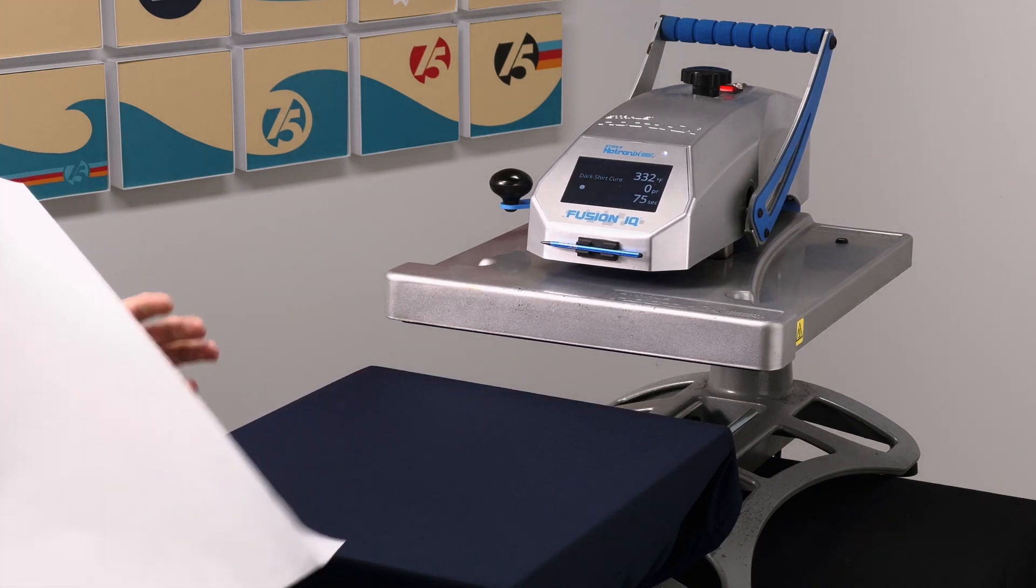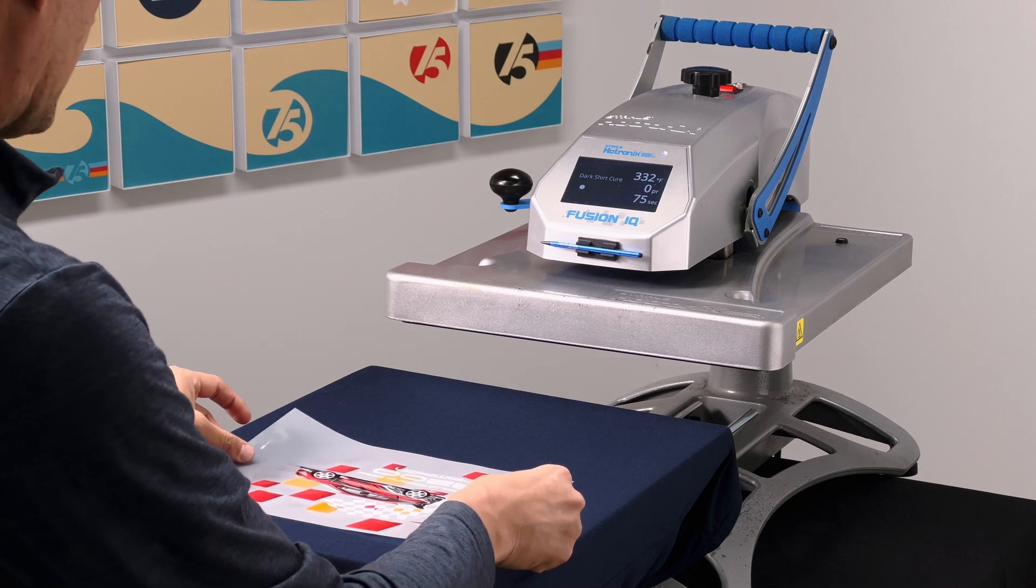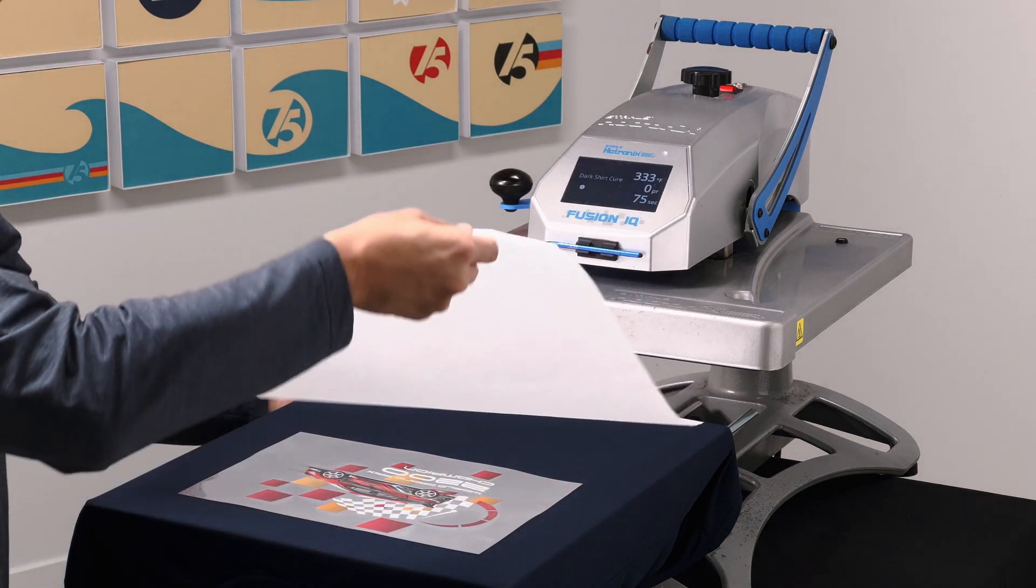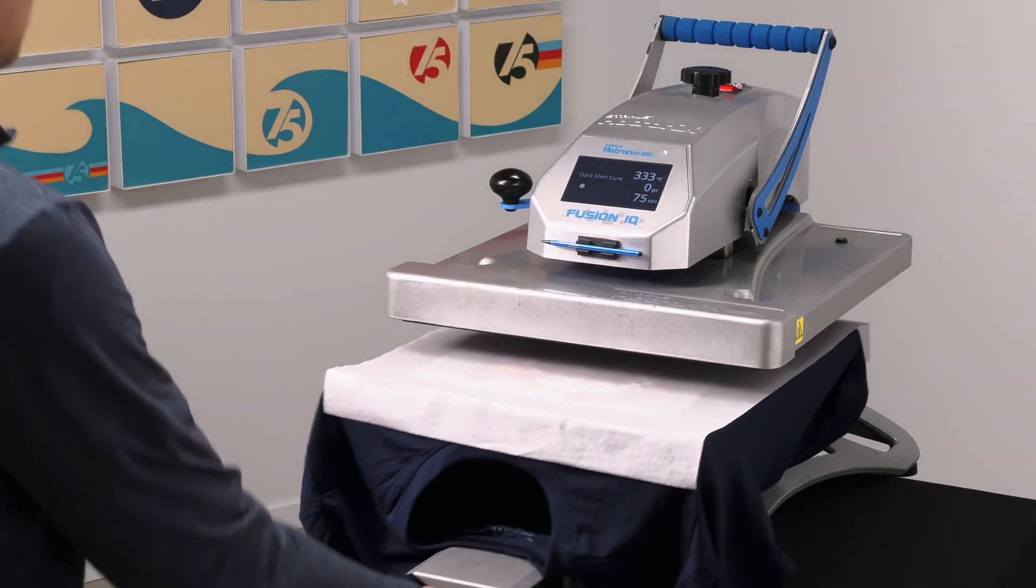Next, remove the parchment paper, and place the film transfer where you would like it to be on the garment. Put the parchment paper back on top, and press for 20 seconds.